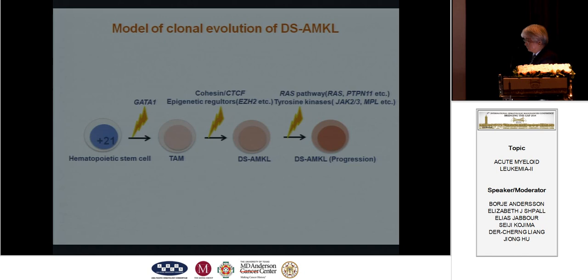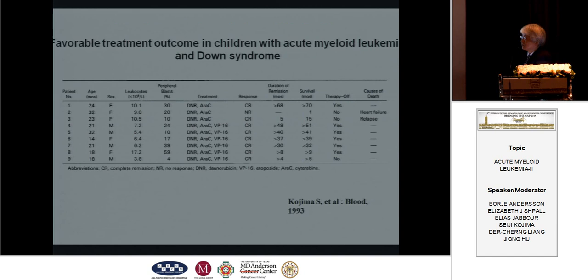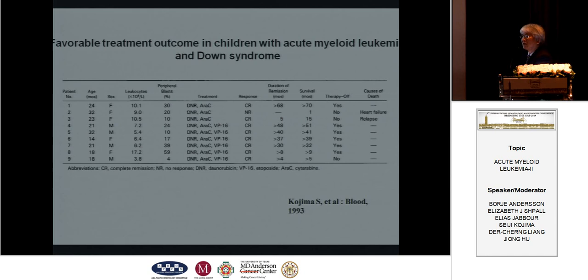The next topic is treatment of Down syndrome AMKL. Before the 1990s, all patients with Down AML were treated outside of clinical trials. Most patients were treated with suboptimal or very intensive chemotherapy, the same as non-Down patients, but the outcome was very poor — all patients died. From the 1990s, in our institute, we treated patients with less intensive chemotherapy specifically designed for Down AML patients. The result was excellent. Using the combination of daunorubicin, VP16, and cytosine arabinoside, all patients survived.